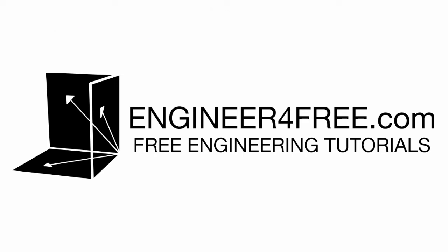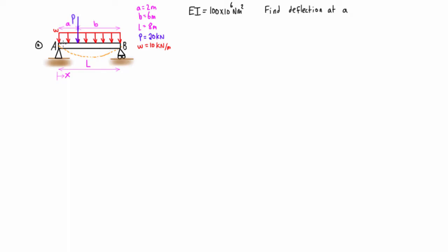All right guys, welcome back. In this video we are doing a method of superposition example with a statically determinate beam with two different loads on it. Our goal is to find the deflection at little a, which happens to be two meters away from big A, about a quarter of the way across this eight meter span.